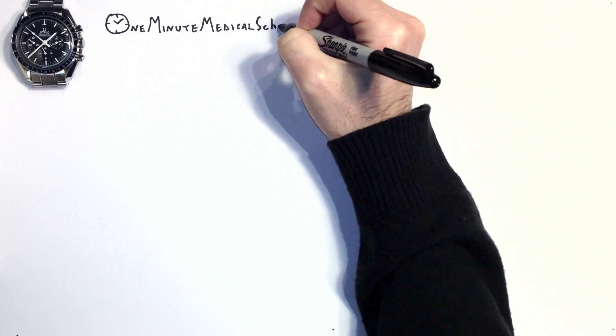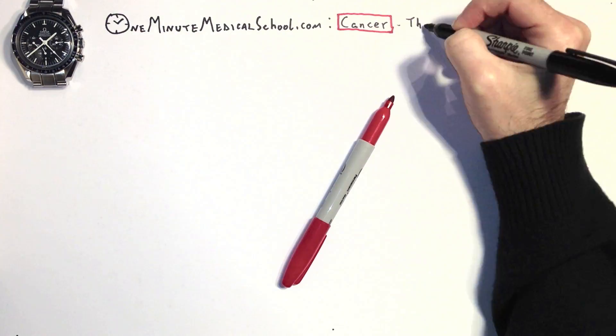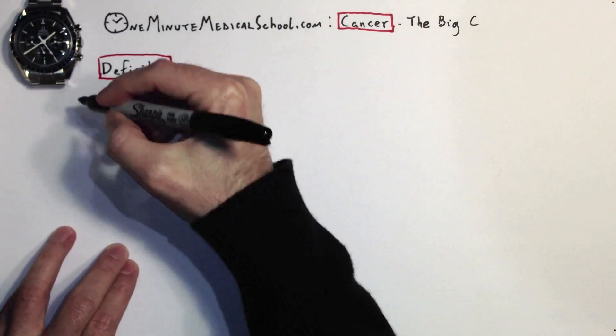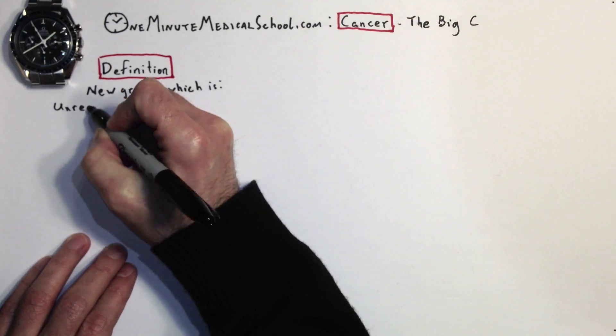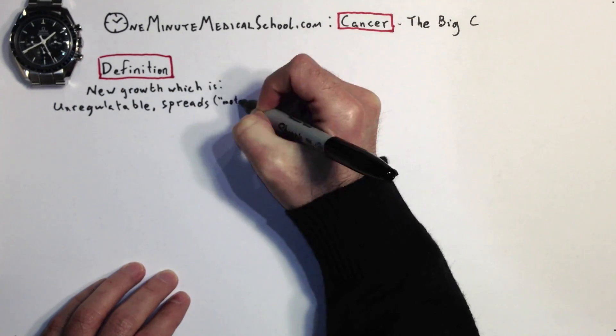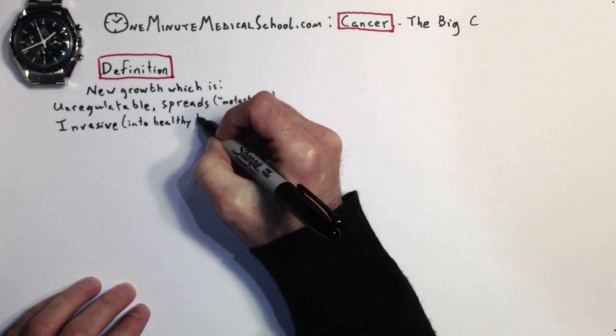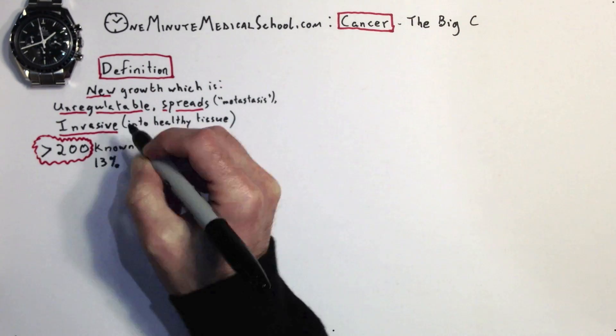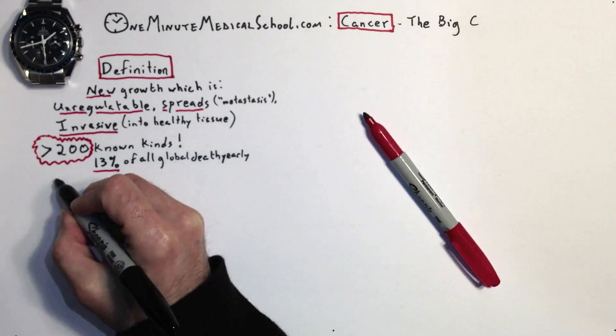Cancer is a form of neoplasia, or new growth. It is unregulatable, it spreads or metastasizes, and it invades into healthy tissue. There are more than 200 known kinds, and it's responsible for 13% of global deaths yearly.